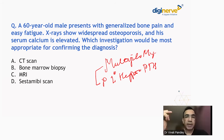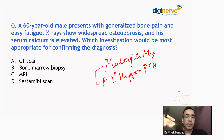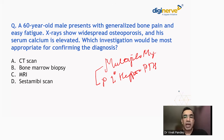Serum calcium is elevated in both conditions. There's no cutoff value that tells you it's more in multiple myeloma versus primary hyperparathyroidism. At this point, when we discussed this question with many of my colleagues, everyone said this particular question shows more favoritism for multiple myeloma rather than primary hyperparathyroidism.